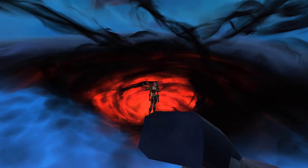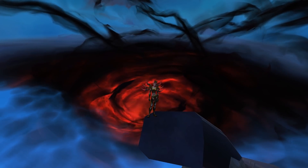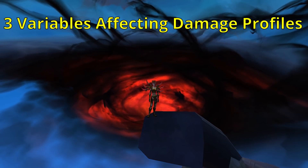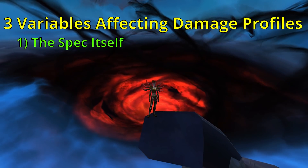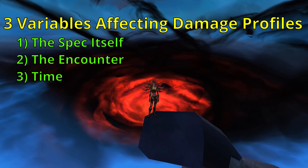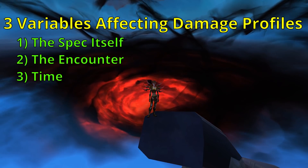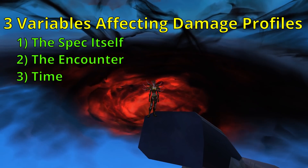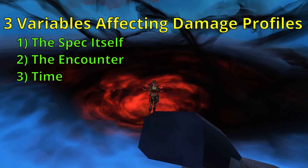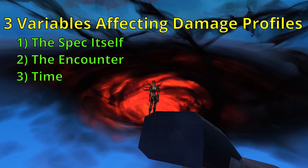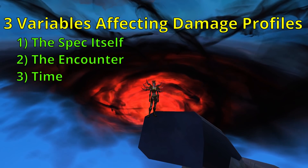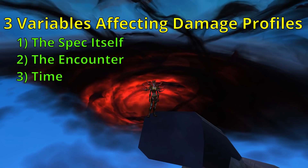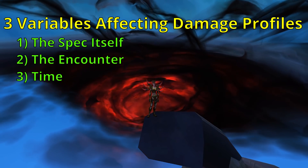Now that we have a definition for what a damage profile is, let's start to understand why they are the way that they are. It's important to understand that there are three variables that dictate a damage profile: the spec itself, the encounter, and time. There is also a fourth variable, which is the skill of the player, but usually when people are talking about damage profiles, they're doing it in a general, more abstract sense and are assuming perfect play, or at least equal skill relative to all of the other specs.